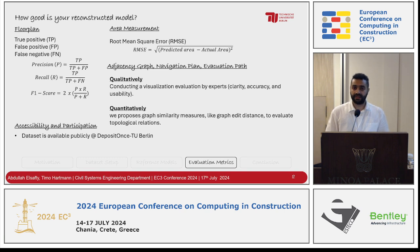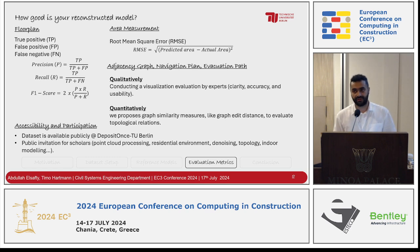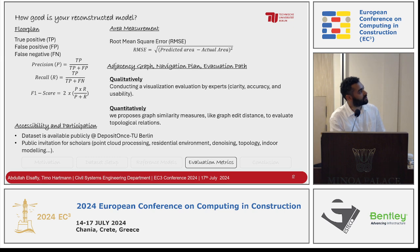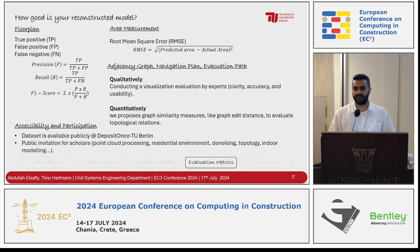The dataset is already publicly available on the deposit repository at TU Berlin — you can download it and work on it. It's a public invitation for everyone working on point cloud processing, residential environments, denoising, topology, and indoor modeling. We put denoising in the list because we didn't do any preprocessing — we have raw point cloud data without doing anything — because we believe that noise in indoor environments could be considered valuable information. For example, a couch or a frame on a wall may represent space classification information.